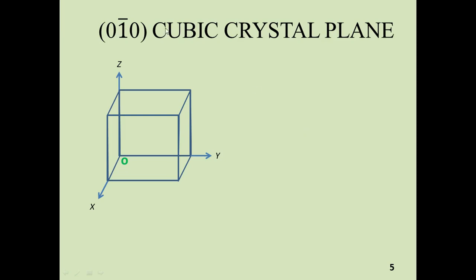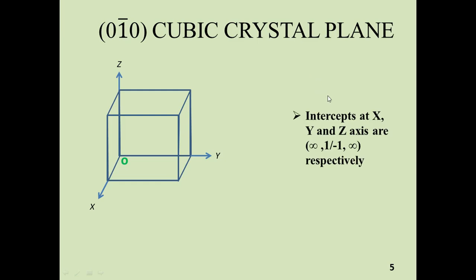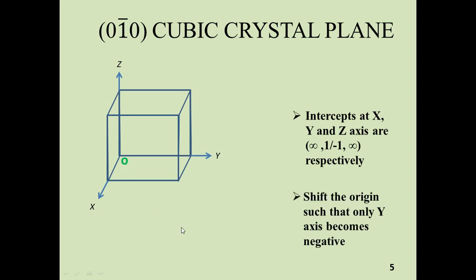Now for the (01̄0) cubic crystal plane. The first step is to find the intercepts by taking the reciprocal of the Miller indices. The intercept at the x-axis is at infinity, the intercept at the y-axis is minus 1 over 1, and the intercept at the z-axis is once again at infinity. Since the intercept at the y-axis is negative, we have to move the origin so that only the y-axis becomes negative.